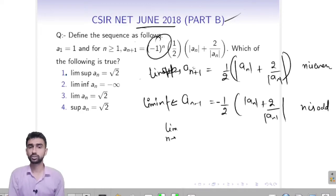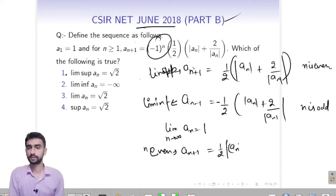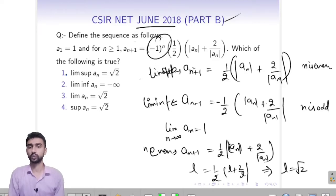If An tends to infinity, I am taking An equals to L. Putting the values, An+1 for N even: An+1 equals to 1 by 2 times (An mod plus 2 upon mod An). So it will be L equals to 1 by 2 times (L plus 2 by L). If you solve this, you will get L equals to root 2.